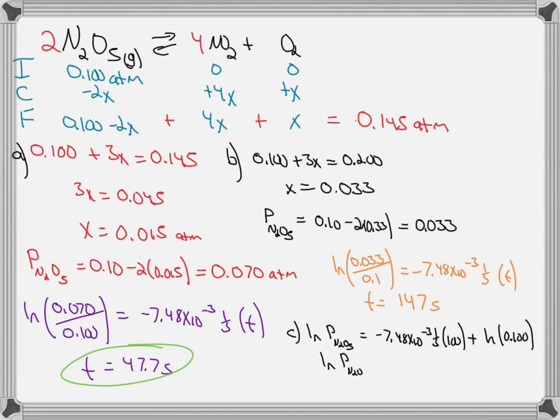This gives us the natural log of the pressure of N2O5 after 100 seconds of negative 3.05. We take the anti-natural log of both sides. That's E to the negative 3.05 is 0.0473. Now that is the pressure at time at 100 seconds of N2O5, which is 0.1 minus 2x. So 0.1 minus 2x is equal to 0.0473. And we can solve for x. x is 0.0263.